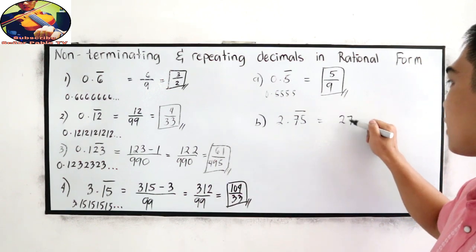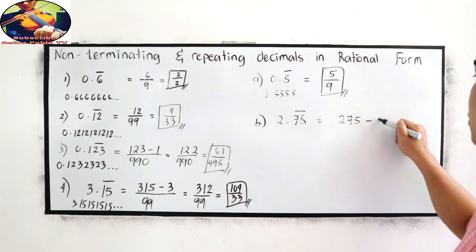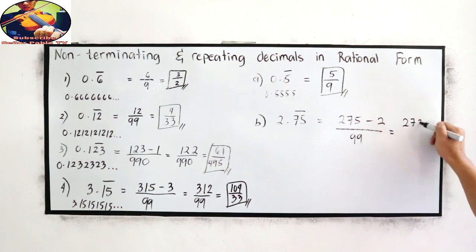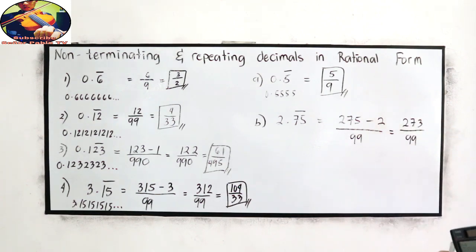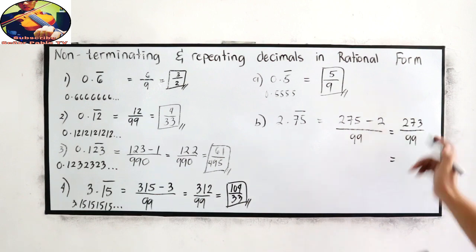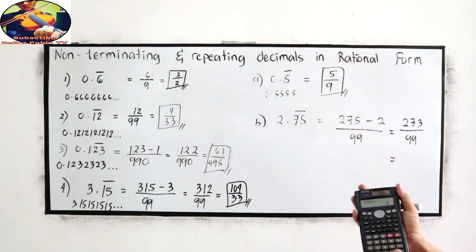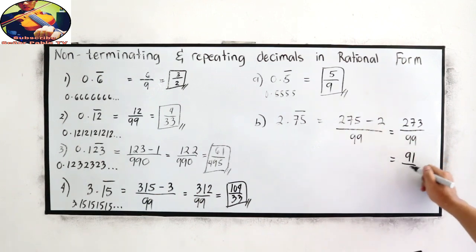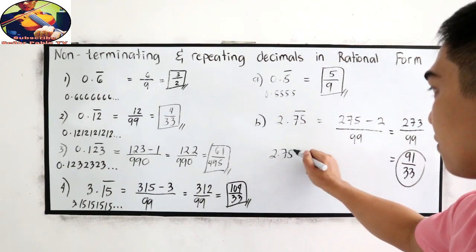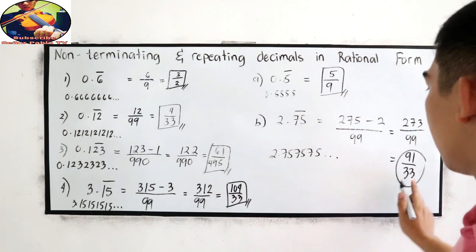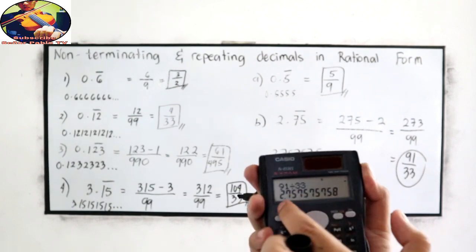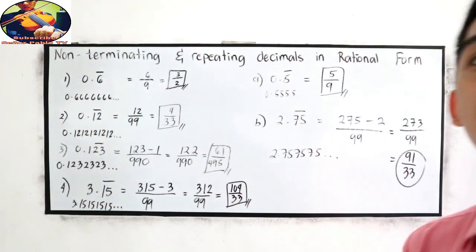Number 2: 2.75 bar. We do 275 minus 2 over 99, giving us 273 over 99. Is it divisible by 3? Yes! 273 divided by 3 is 91, and 99 divided by 3 is 33. So 91 over 33. We know this is 2.757575 and so on. Let us check: 91 divided by 33 equals 2.75757575 and so on. Correct!